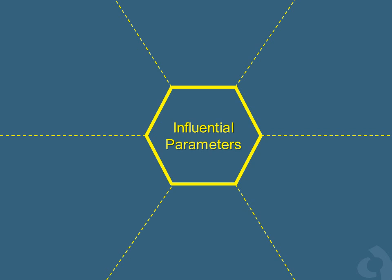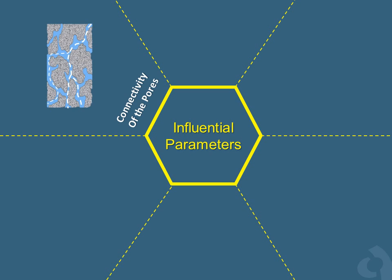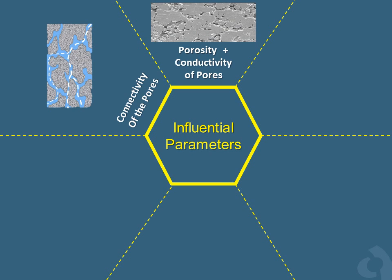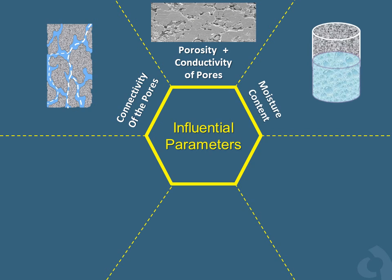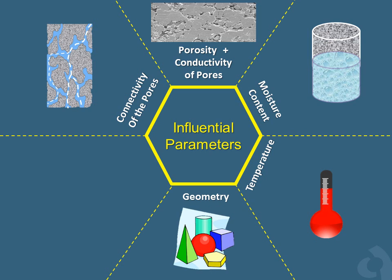The inherent electrical resistivity of concrete is affected by the following six parameters: number one, the connectivity of pores; number two, porosity and conductivity of pore solution; number three, moisture content; number four, temperature; number five, the geometry of the specimen; and finally, number six, electrical signal frequency.